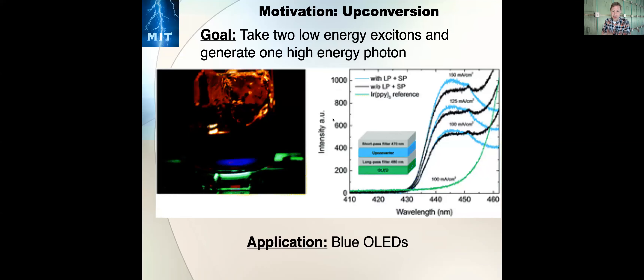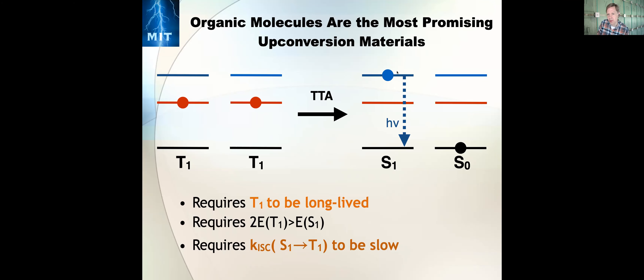I hope I've convinced you that up-conversion is interesting. The reason I think it's interesting to this audience is that organic molecules are quite clearly the most promising up-conversion materials that exist. The reason is the process of triplet-triplet annihilation in organic materials: if you have two molecules in their lowest triplet state next to each other, when these two excitons run into each other, they pool their energy onto just one molecule, creating a singlet excited state.